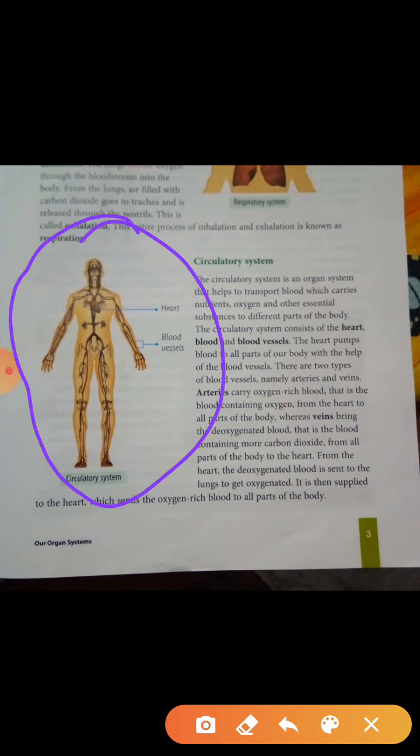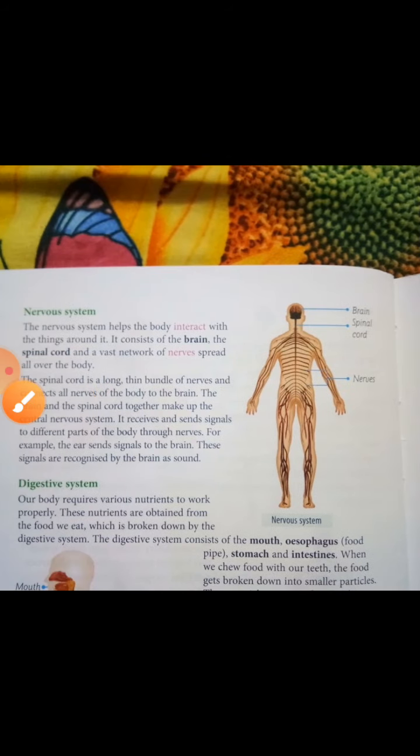To recap the circulatory system: it is an organ system that helps transport blood, which carries nutrients, oxygen, and other essential substances to different parts of the body. The main parts are the heart, blood vessels, and blood. There are two types of blood vessels — arteries carry oxygen-rich blood and veins carry deoxygenated blood.